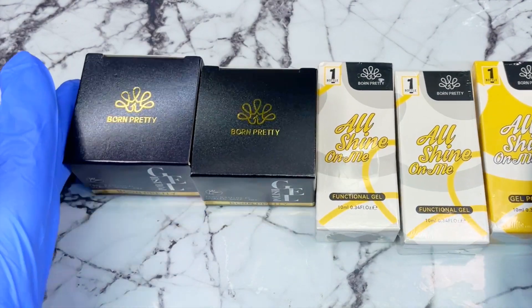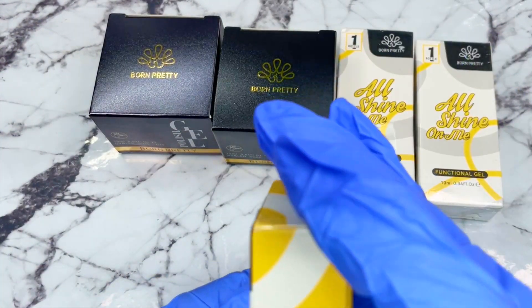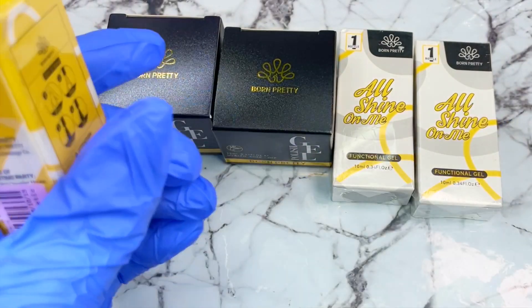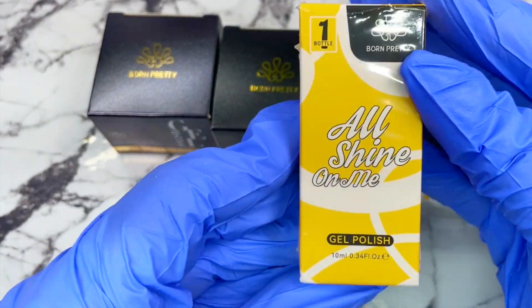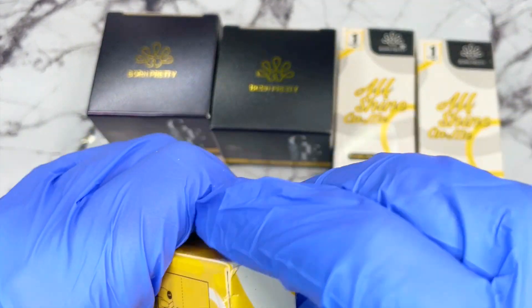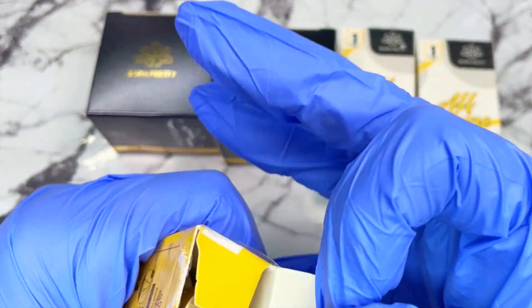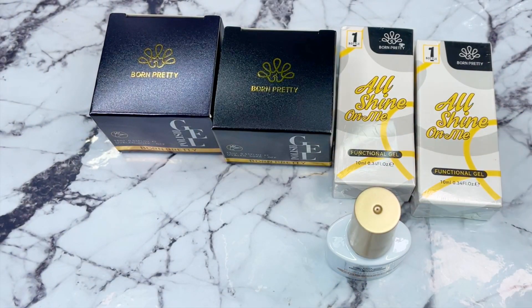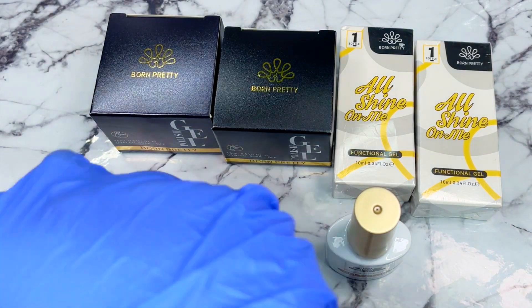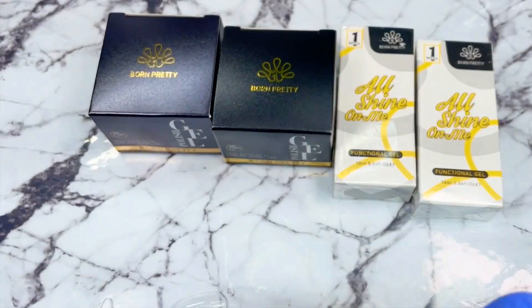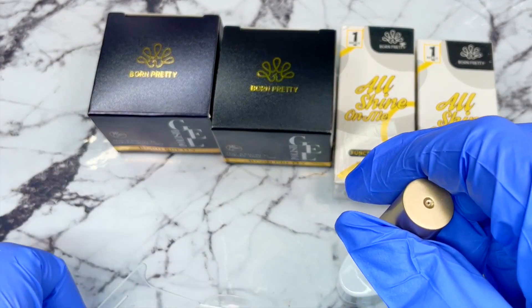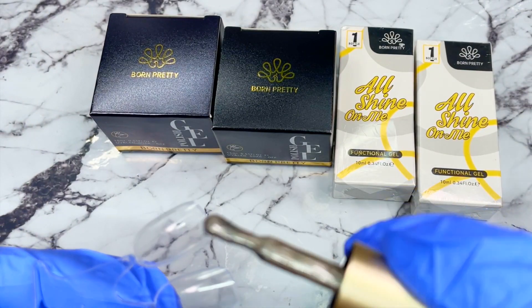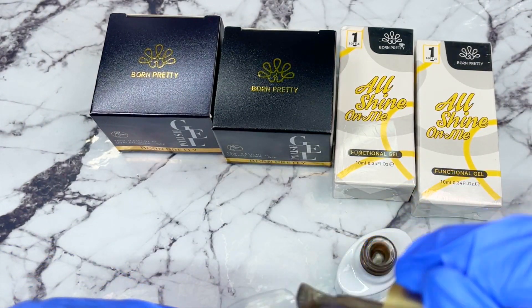I got five things and let's start with this called Moonlight cat gel, the cat eye gel, and it is a 10 milliliter bottle. This when I looked at it on the picture looks so pretty, can't wait to see how it looks.